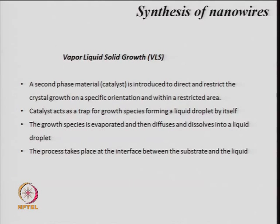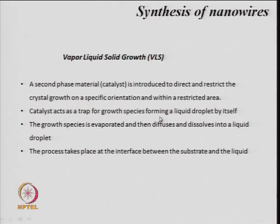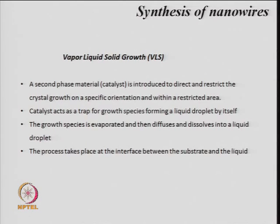The catalyst traps the volatile semiconductor species converted to vapor, forming a liquid droplet with the semiconductor material you are trying to grow into nanowires. For example, if you want a gallium oxide wire or a cadmium selenide wire, that growth species is evaporated, then diffuses and dissolves into a liquid droplet made by the catalyst. This process takes place at the interface between the substrate and the liquid.